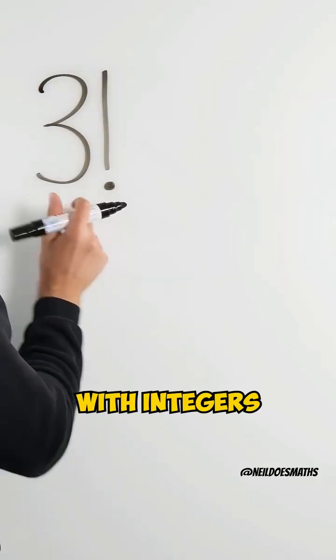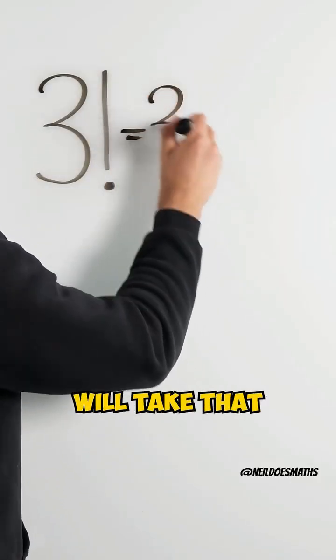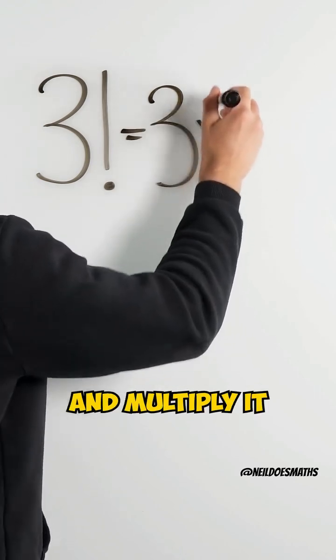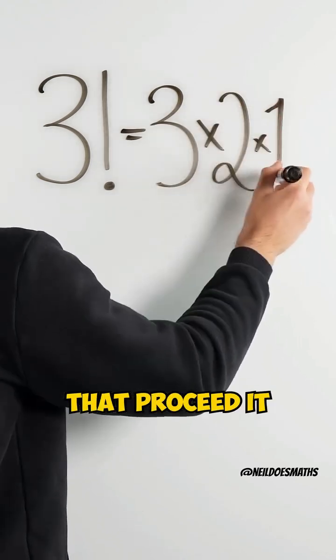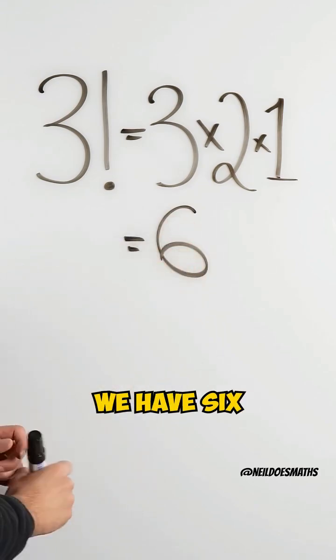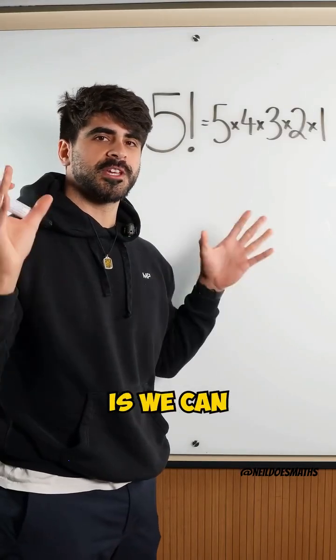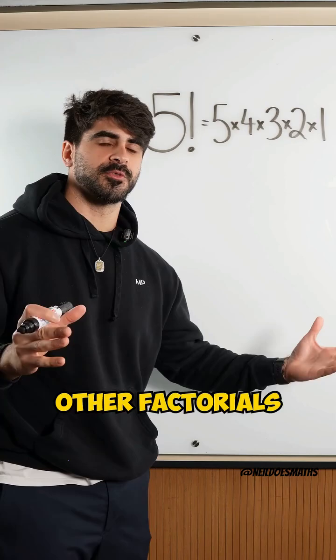With integers, a factorial will take that integer and multiply it by the integers that precede it down to one. In this case we have six. Now the cool thing with factorials is we can rewrite them in terms of other factorials.